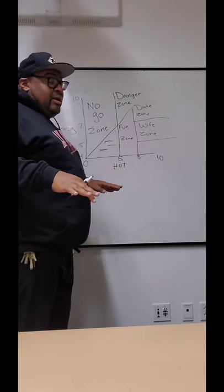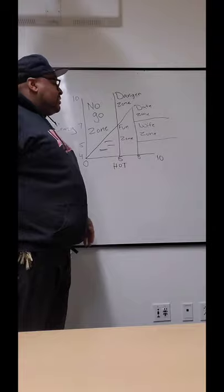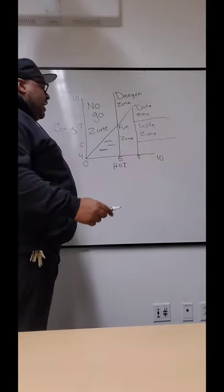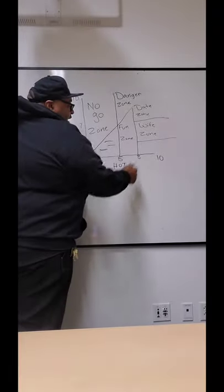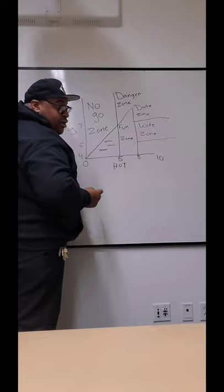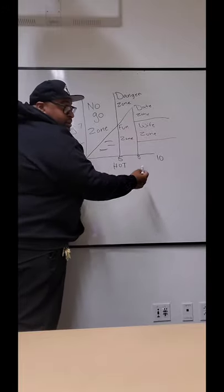Now, that scale can vary for different guys for different reasons, but typically the wife zone, that's the area most guys start to look. Now, this zone, right underneath the wife zone, about a four or five crazy, an eight or above on the hot scale,